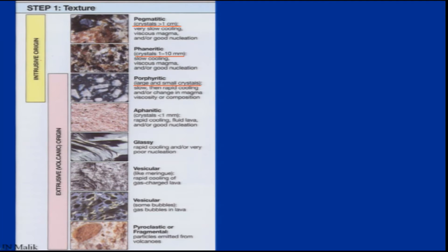We have a ground mass with larger crystals surrounded by it. This type of texture is termed as porphyritic texture. Moving into extrusive rocks further, we have finer ones — that is aphanitic texture — then glassy texture, vesicular, and all that. Aphanitic texture has crystals less than 1 mm from rapid cooling of magma.